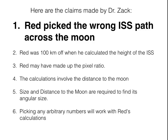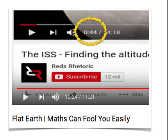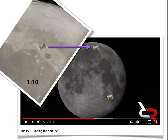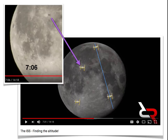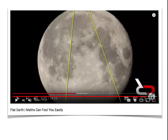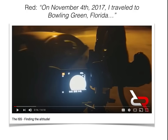Number one: you claim that Red picked the wrong ISS path. Let's examine this claim. Just to make him a little bit angry, let's skip to 44 seconds and pause and memorize the track. So I did just that — I went to 44 seconds and captured a couple of sightings frame by frame, putting the ISS on the moon, very carefully looking at those craters. Then skip to 6:20 and pause and memorize the track again. I went frame by frame and put the ISS based on where those craters were exactly, and those are the tracks I got.